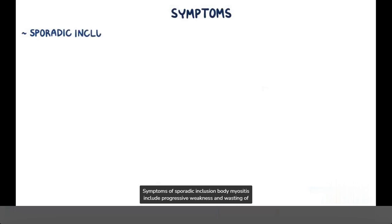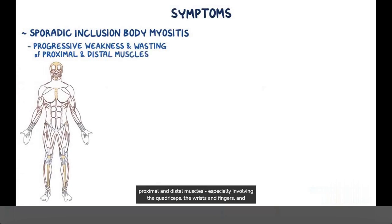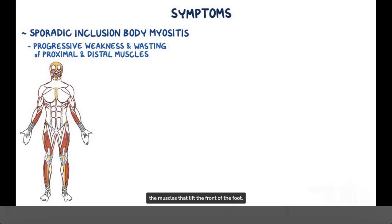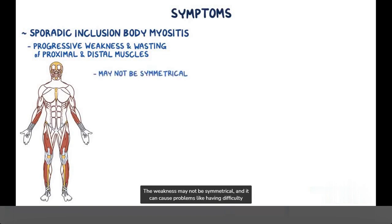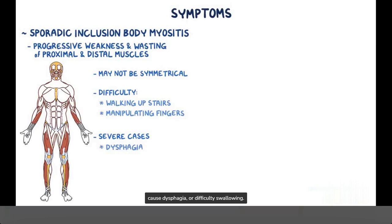Symptoms of sporadic inclusion body myositis include progressive weakness and wasting of proximal and distal muscles, especially involving the quadriceps, the wrists and fingers, and the muscles that lift the front of the foot. The weakness may not be symmetrical, and it can cause problems like having difficulty climbing stairs and manipulating fingers. In severe cases, the muscles of the pharynx or the esophagus are involved, and that can cause dysphagia, or difficulty swallowing.